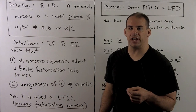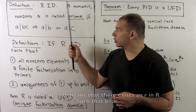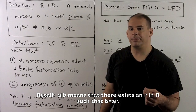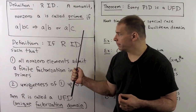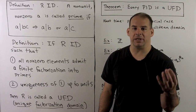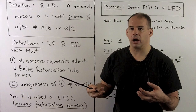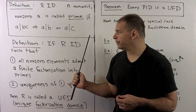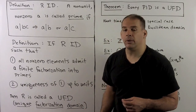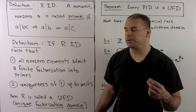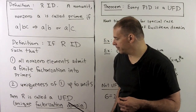We want a version of unique factorization for integral domains. For that, we need a definition of primes. If R is an integral domain, a non-zero, non-unit a is called a prime if whenever a divides bc, we must have a divides b or a divides c — we can't pull a apart. Definition: R is an integral domain such that (1) all non-zero elements admit a finite factorization into primes, and (2) the factorization is unique up to units. Then we call R a unique factorization domain, or UFD for short. It turns out every PID is a UFD, though we won't show that here; instead next time we'll show that every Euclidean domain is a UFD.